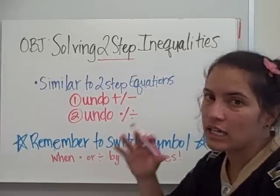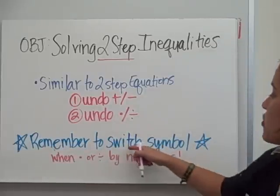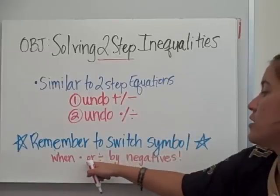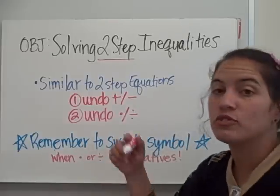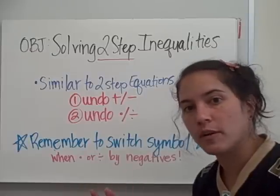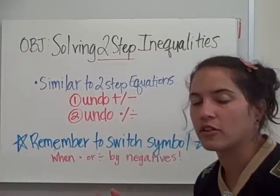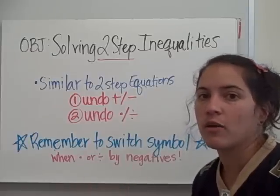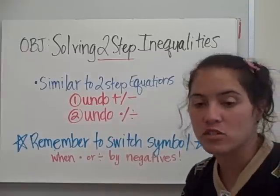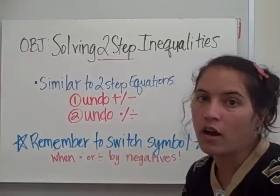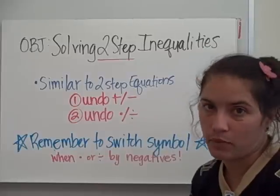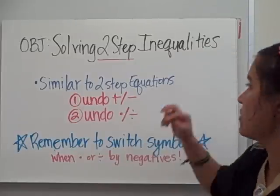The key — the big difference is that you switch the symbol when you multiply or divide by a negative. So you just went over that with one-step equations. Now we're going to put two-step inequalities together, and when you multiply or divide by a negative, that is when you have to switch your inequality symbol the other way. So let's do some examples with two-step inequalities.